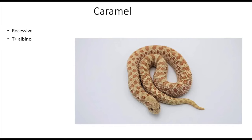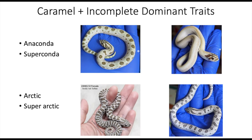Similar to lavender, toffee, Evans hypo — all of those are T-plus albinos. I find that the caramel gene looks very similar to the toffee belly, but with one noticeable distinction: a lot of times, but not always, the caramel gene reduces the head pattern of the snake.